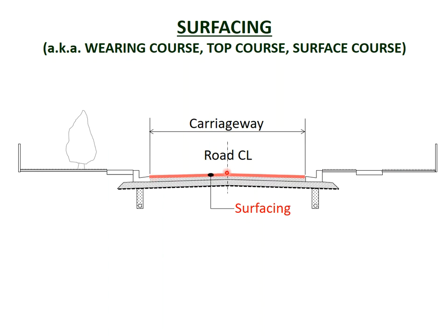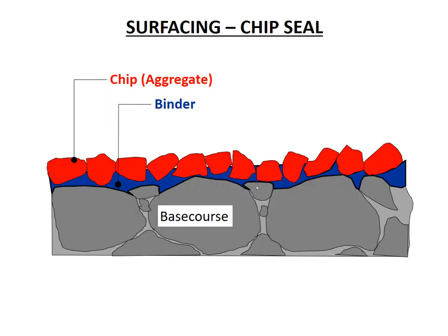The main surfacings used in New Zealand are chip seal and asphalt concrete. There are also unsealed roads. A chip seal involves laying a layer of bitumen binder on the surface from a bitumen spray truck. Tip trucks then lay the chip, which is rolled to push the chips into the bitumen and interlock them to provide better resistance to being plucked out by vehicle movements. The chip becomes strongly embedded when the bitumen cools and hardens. This is the most common way of sealing roads in New Zealand.